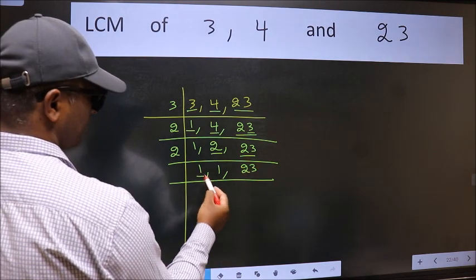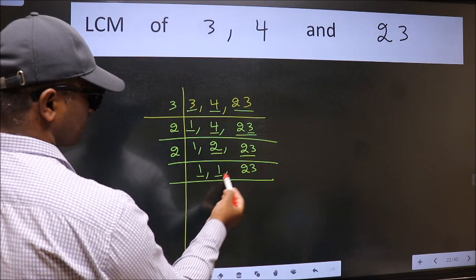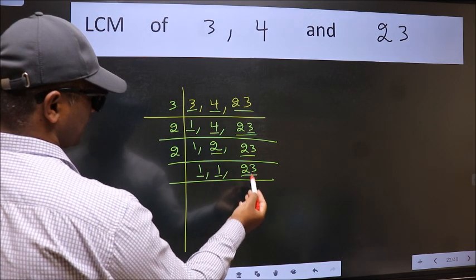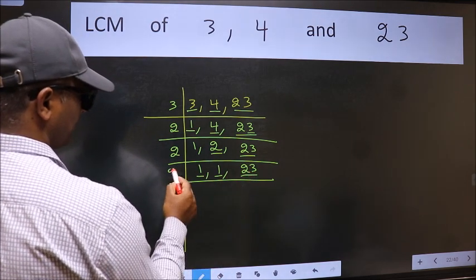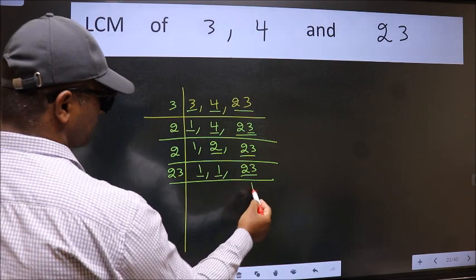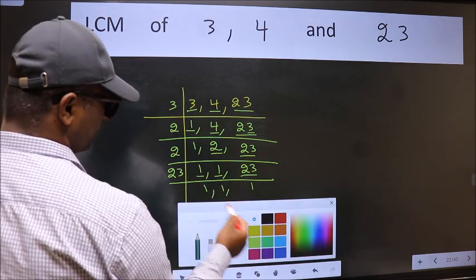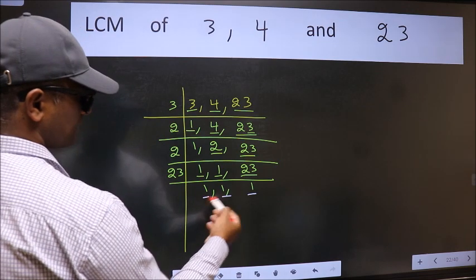Now we got 1 here and here. So focus on the next number 23. 23 is a prime number. So 23 divided by 1 is 23. So we got 1 in all the 3 places.